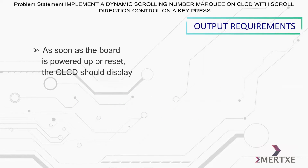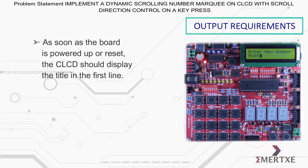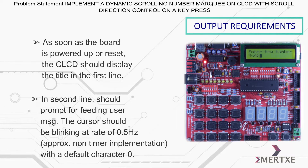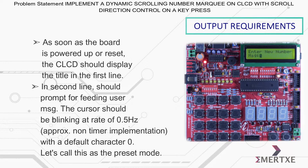As soon as the board is powered up or reset, the CLCD should display the title in the first line. The second line should prompt for feeding user message. The cursor should be blinking at a rate of 0.5 Hertz with a default character zero. Let's call this as the preset mode.